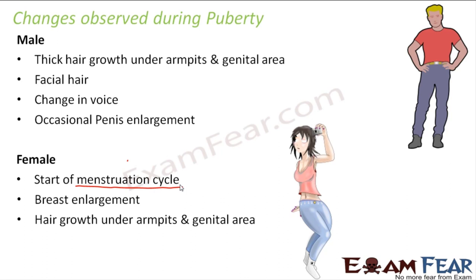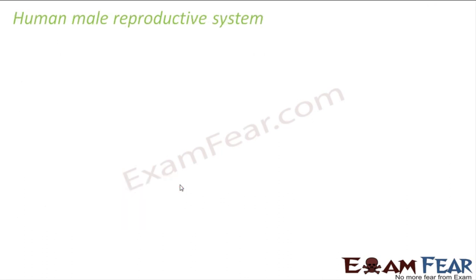Now we will see what actually happens in sexual reproduction — how are the male and female sex cells produced inside the human body. Let us first talk about the human male reproductive system. In human beings, the reproductive systems for male and female are totally different structurally, so let us talk about the structure of the human male reproductive system.